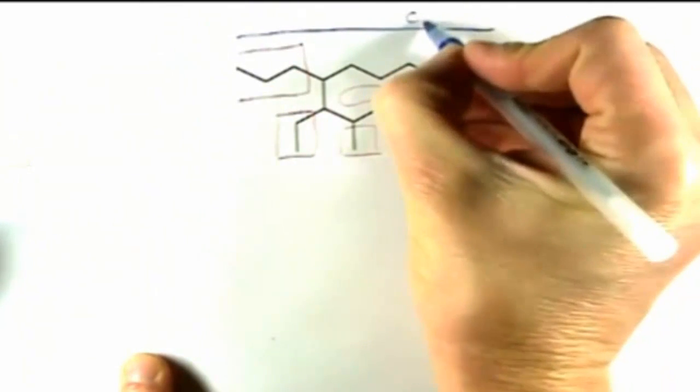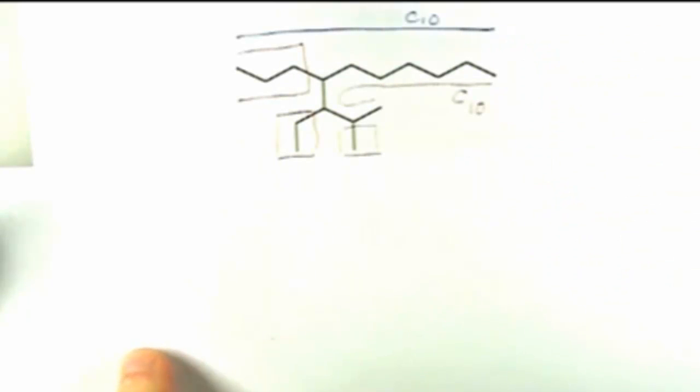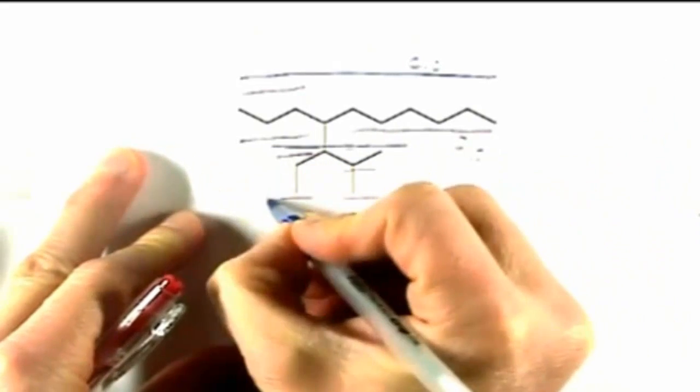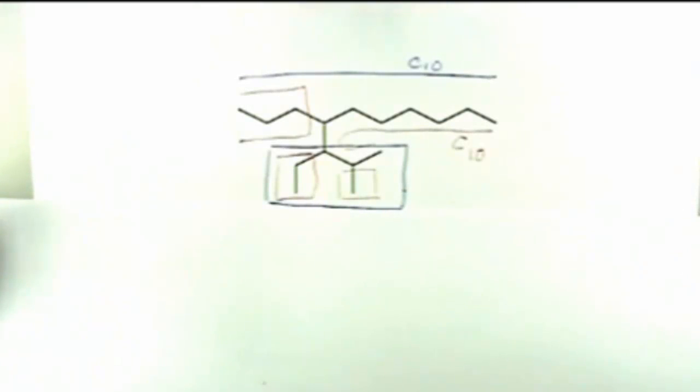If in contrast to that we consider the 10-carbon chain across the top of the molecule, the carbons that are in the chain are the ones along here. And so in that case you only have this one single side chain right here.